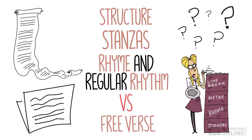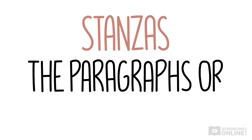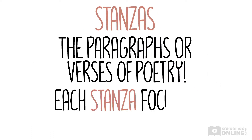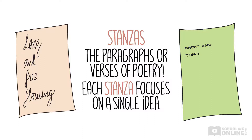First, what are stanzas and how do they help create meaning? Think of stanzas as like the paragraphs or verses of a poem — they are the groups of lines separated by spaces, and each stanza focuses on a single idea. Sometimes they can be long and free-flowing; other times they're short and tight. Poets will vary their stanza length depending on what they're trying to convey.